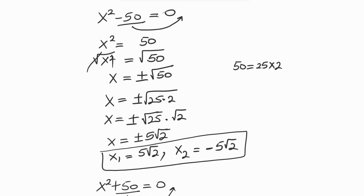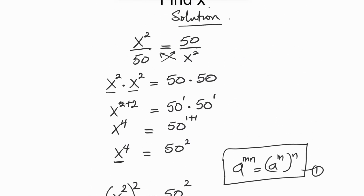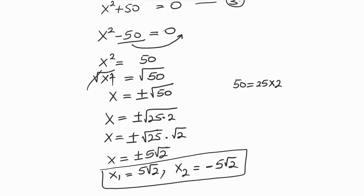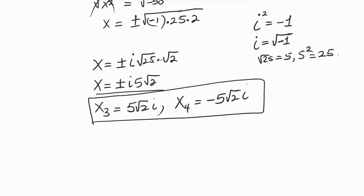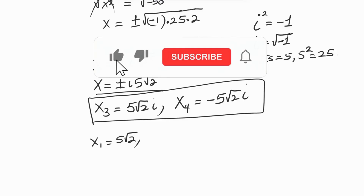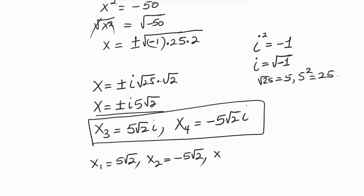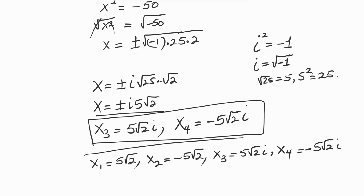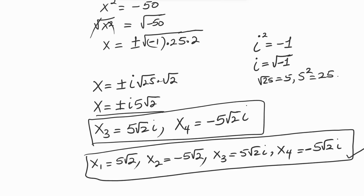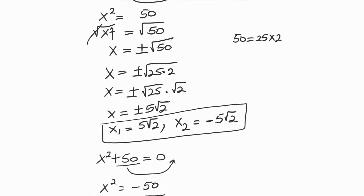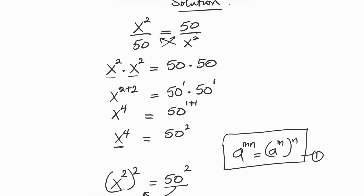So our four answers are: x₁ equals 5 root 2, x₂ equals minus 5 root 2, x₃ equals 5 root 2i, and x₄ equals minus 5 root 2i. These are the answers to our question. If you'd like to see more math videos like this, please subscribe to the channel. Thank you for watching and I'll see you on the next one. Bye bye.